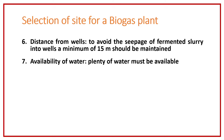Next is availability of water. We all know that plenty of water is required for mixing the feed material for optimum biogas production. The required total solid content in the digester for optimum biogas production is almost 8 to 10 percent. For cow dung, we mix it with an equal amount of water to bring total solid content to the desirable level, so plenty of water must be available at that particular site.